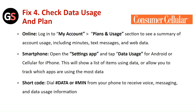Fix 4: Check the data usage and plan. Online, log in to your My Account plan and usage section to see a summary of your account usage, including minutes, text messages, and web data. On your smartphone, open the Settings app and tap on Data Usage for Android, or Cellular for iPhone. This will show you a list of apps using data and allow you to track which apps are using the most data.